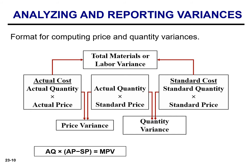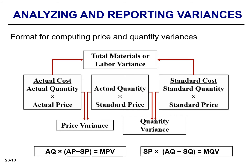An alternative method, which is my preference, is to calculate the price variance by multiplying the actual quantity purchased by the difference between the actual and standard price per unit. The quantity variance can also be calculated by multiplying the standard price by the difference between the actual and standard quantities used.